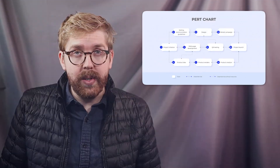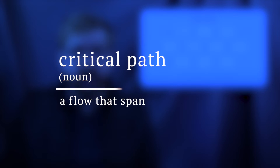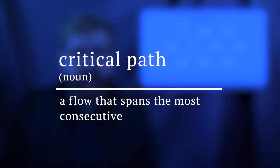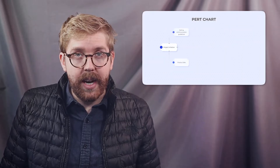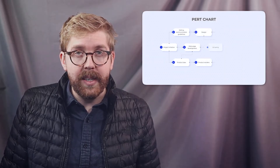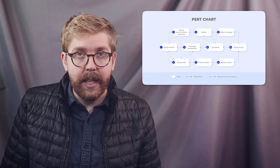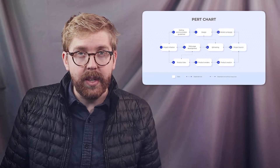PERT also includes Critical Path, which is a flow that spans the most consecutive dependent tasks. Because of that, it's critical to the project's success. Having all the tasks laid out in this way will help you estimate the duration of the critical path and the project as a whole.